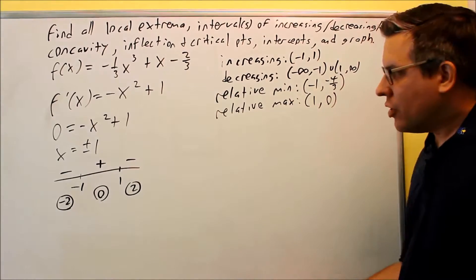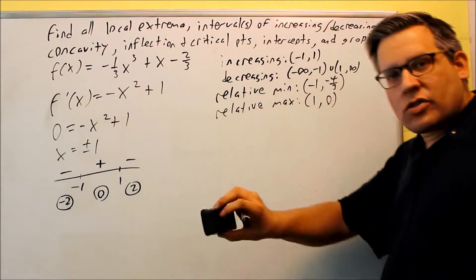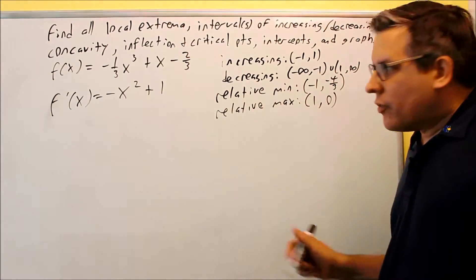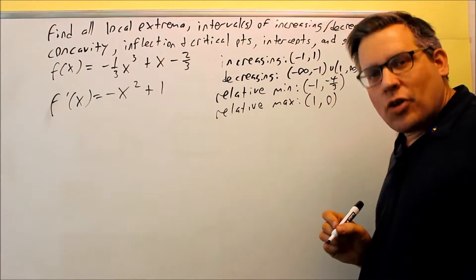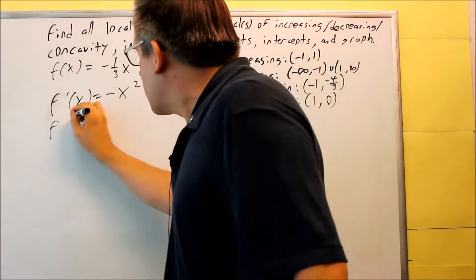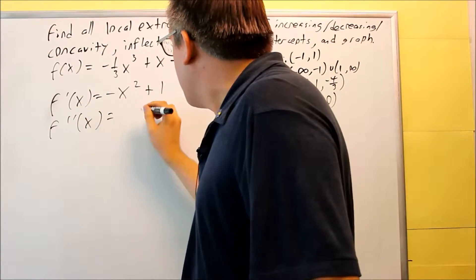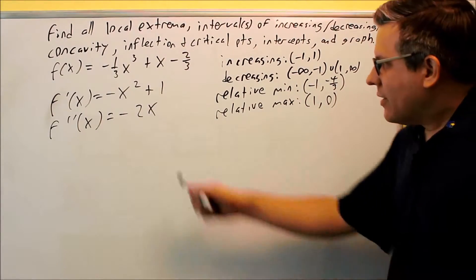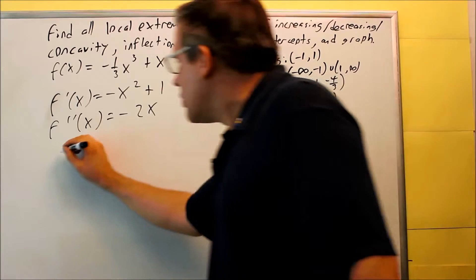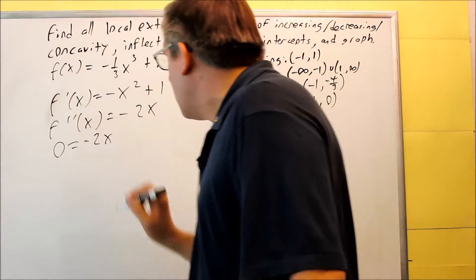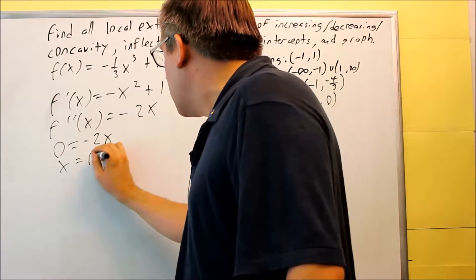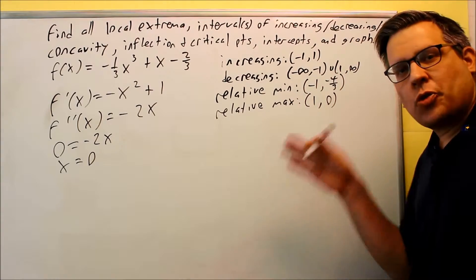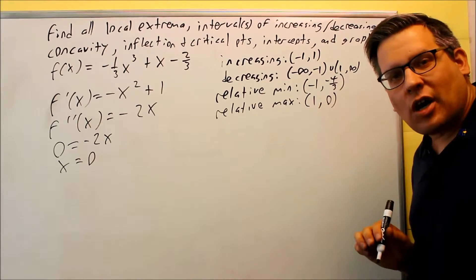Now let's take a look at the second derivative. It's the derivative of the first derivative, and using the power rule we get negative 2x. We set that equal to zero, and we get x equals zero. We don't know if that's an inflection point until we put it on the number line and verify there's a change in sign.